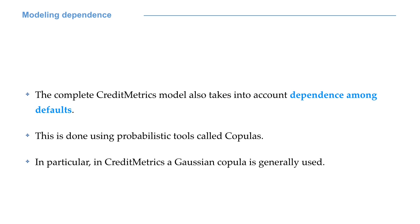Naturally, the complete CreditMetrics model also takes into account dependence among defaults. This is done using probabilistic tools called copulas. In CreditMetrics, a Gaussian copula is typically used according to the so-called Lease model. But as you can imagine, such a topic requires a knowledge of probability which I cannot assume in this course.